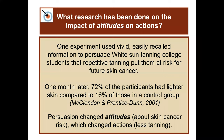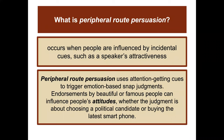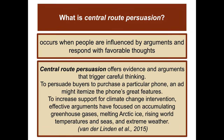In one experiment, vivid, easily recalled information was used to persuade white sun-tanning college students that repetitive tanning put them at risk for future skin cancer. A month later, 72 percent of participants had lighter skin, compared to 16 percent in a control group — persuasion changed attitudes, which changed actions. The first type of persuasion is peripheral route persuasion, which occurs when people are influenced by incidental cues such as a speaker's attractiveness. It uses attention-getting cues and emotion-based snap judgments — endorsements by beautiful or famous people — to influence attitudes.